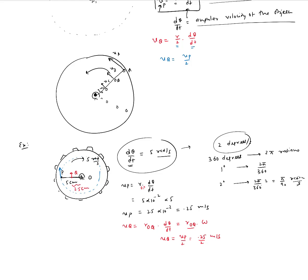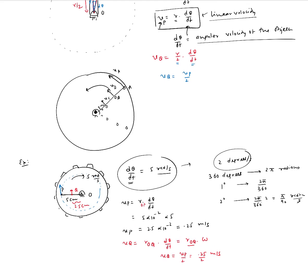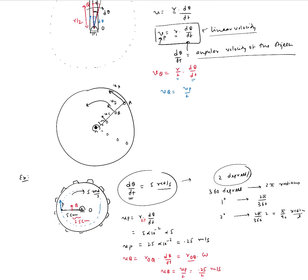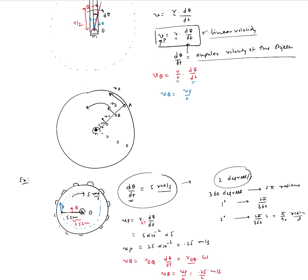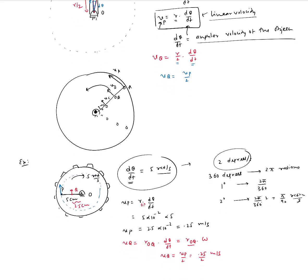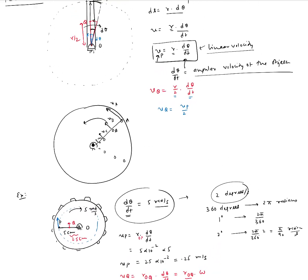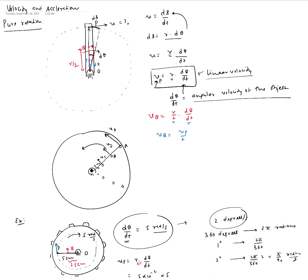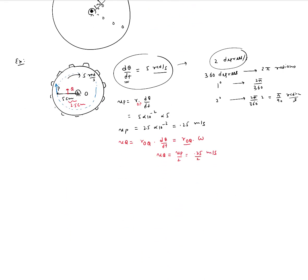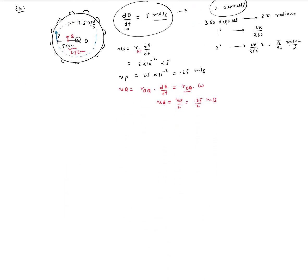So the linear velocity of a point is determined by both the distance from the point to the center of rotation and the angular speed. Now, we've only talked about linear velocity and how it relates to angular velocity. What about acceleration?